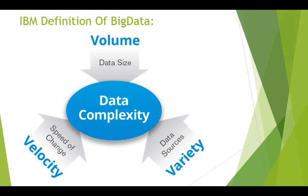The IBM development team has given one definition for big data in three words. The first one is Volume — which is simply the data size, meaning how big your data is. The second is Velocity — which is simply the speed, meaning how fast we can access our stored data.